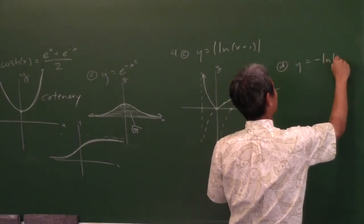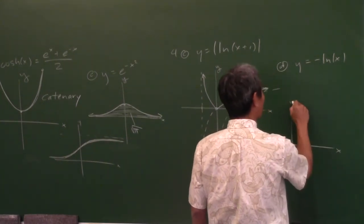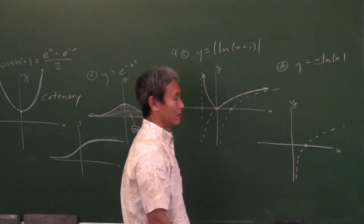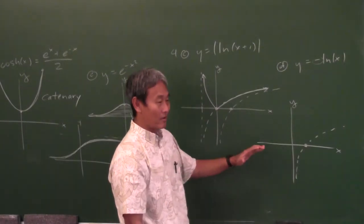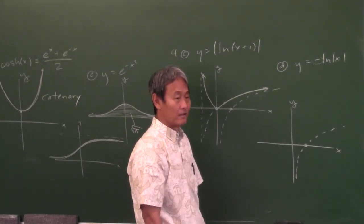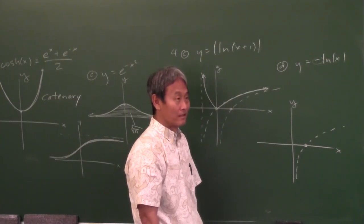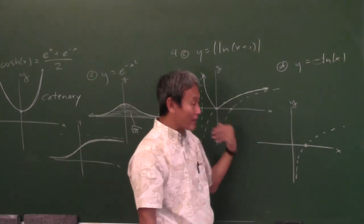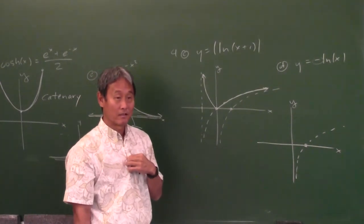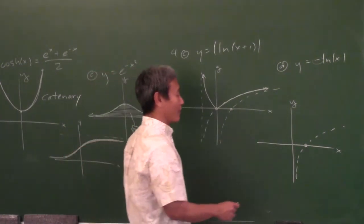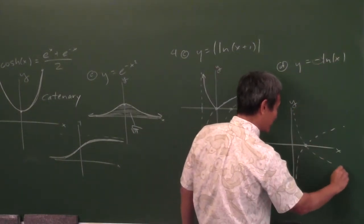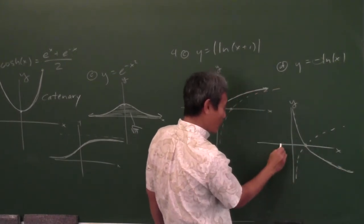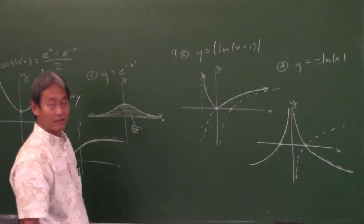Y equals negative natural log of absolute value of x. What does the minus sign do? Reflect the graph over the x-axis. And what does the absolute value of x do? Erase everything to the left of the y-axis, keep and reflect the remaining portion over the y-axis. The order doesn't matter either. First step: reflect over the x-axis — the graph now looks like this. Then erase everything to the left of the y-axis, but there's nothing there. Then keep and reflect over the y-axis. That's what the graph looks like.